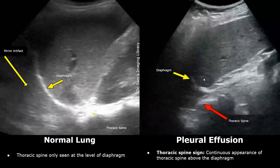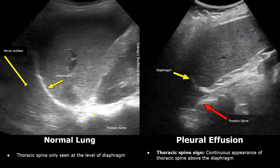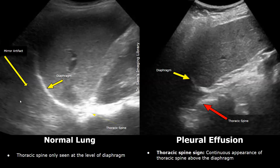This is another image showing the thoracic spine sign. The thoracic spine is visible slightly above the diaphragm, whereas in the normal image it is not seen above the diaphragm at this region. The pleural effusion is less severe compared to the previous image, which is why the thoracic spine sign is less pronounced.